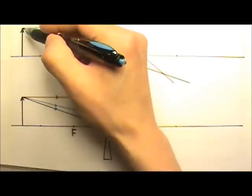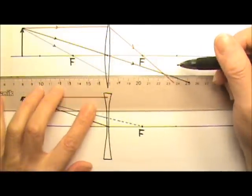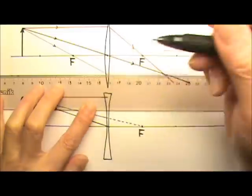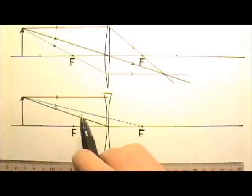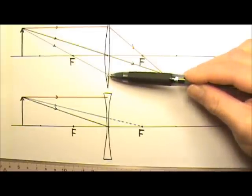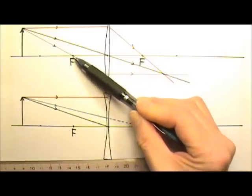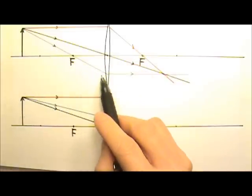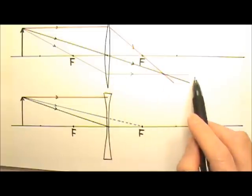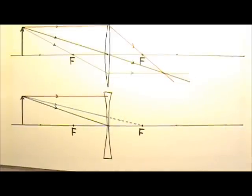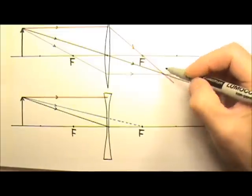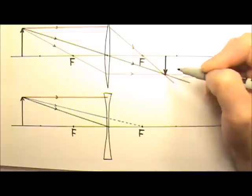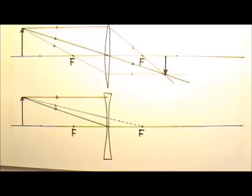The ray that goes through the focal point is going to get reflected parallel to the principal axis, because the light rays are retraceable. The ray that comes in parallel to the principal axis is going to get bent through the focal point, and the ray that goes through the focal point is going to get refracted and bent parallel to the principal axis. The three rays meet here, so this is where the image is formed. Since this image is formed by the real light rays meeting here, we get a real image.